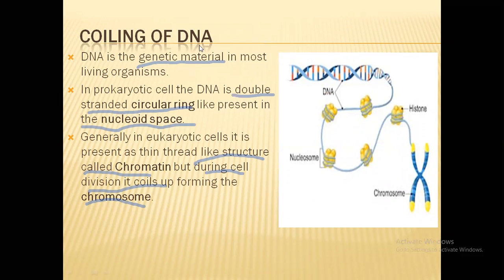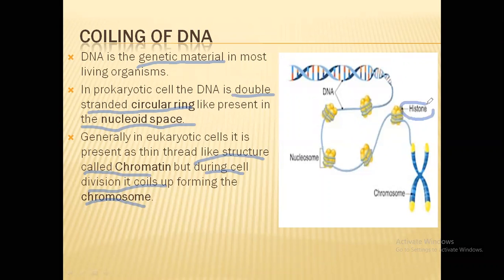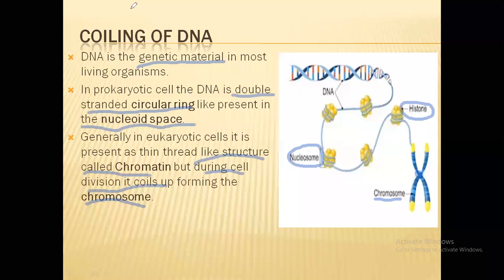This is how the coiling of DNA generally looks. A double-stranded DNA coils up around certain proteins called histone proteins to form units called nucleosomes. This beaded DNA then ultra-coils to form chromosomes which appear to have arms called chromatids and a centromere — a structure already discussed in the class 11th syllabus.